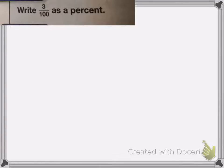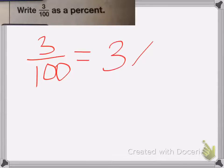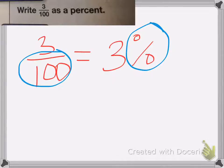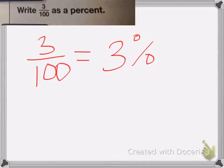So here we have write 3 hundredths as a percent. A percent is a fraction written with a denominator of 100. So in this case, I already have a denominator of 100, so I can turn this right into 3%. Remember, percent means per hundred, so 3 per hundred.